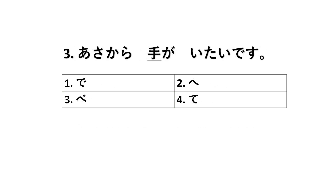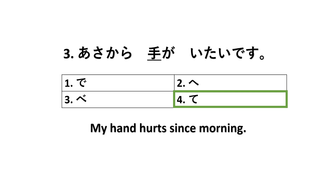Next number: Asa kara ga itai desu. This kanji is read as the fourth one, te. Asa kara te ga itai desu means: my hand hurts since this morning.